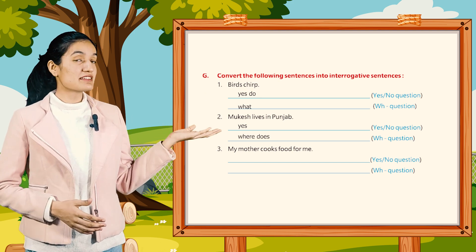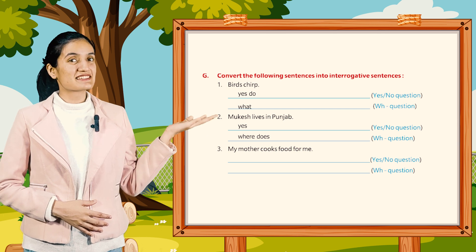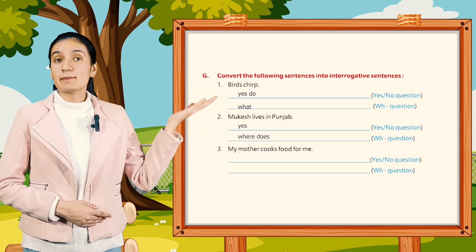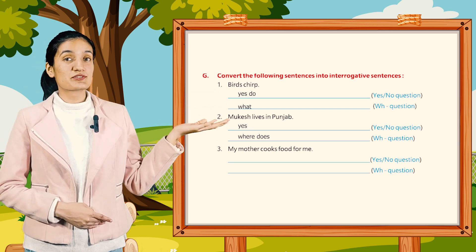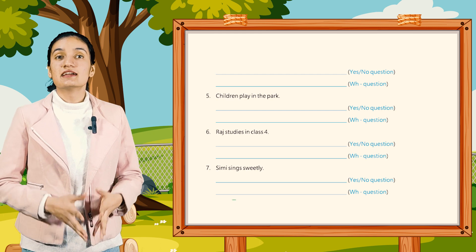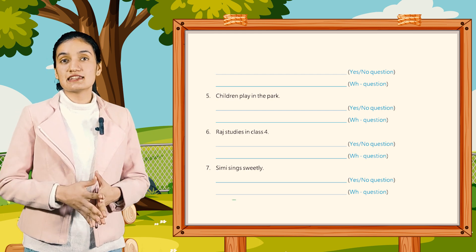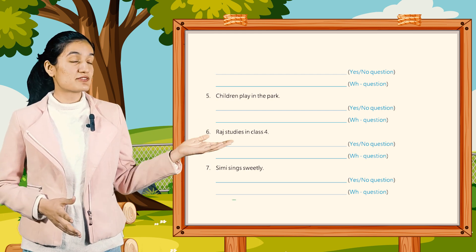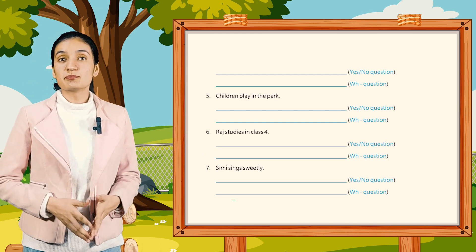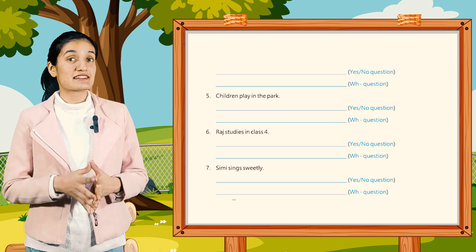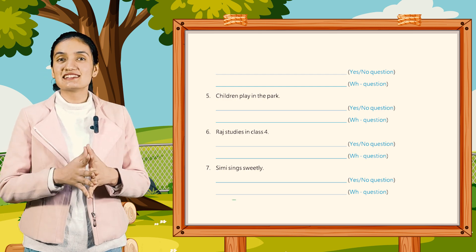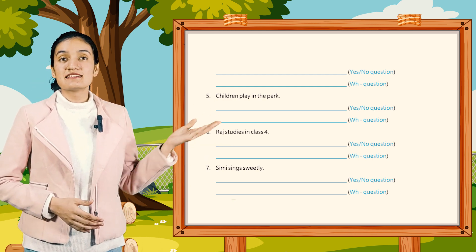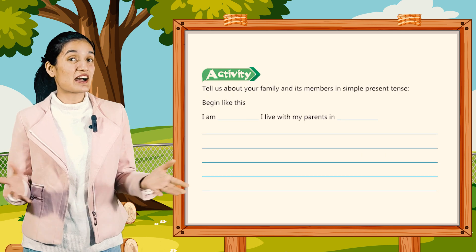So in this way, you have to do the rest by your own. Third, my mother cooks food for me. Fourth, parents take care of their children. Fifth, children play in the park. Sixth, Raj studies in class 4. Seventh, Simi sings sweetly.